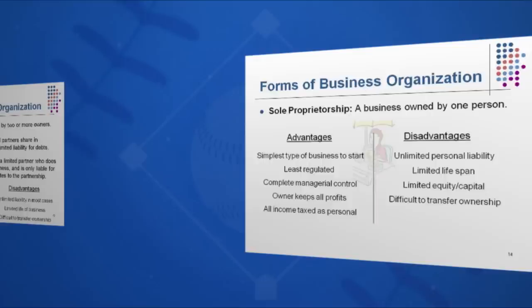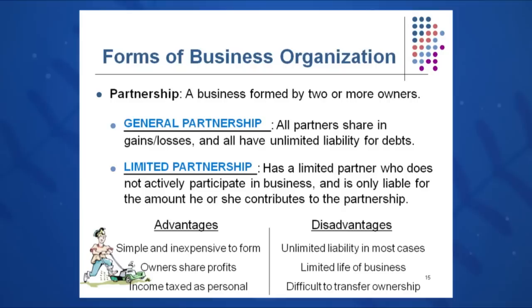In terms of a partnership, you may gather a partner and say, let's start a lemonade stand — you may have done this when you were very young. In a general partnership, all partners share in the gains and losses equally and all income is taxed as personal. You have unlimited liability on the debts if you're a general partner. If you're a limited partner, your liability is limited to the amount you've contributed to the organization.